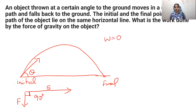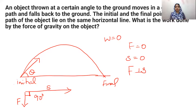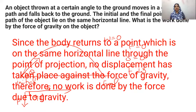When will the work be zero? Work is zero when either force is equal to zero, or displacement is equal to zero, or force is perpendicular to displacement. Since force is perpendicular to displacement here, the work done is zero. Since the body returns to a point on the same horizontal line, no displacement has taken place against the force of gravity.